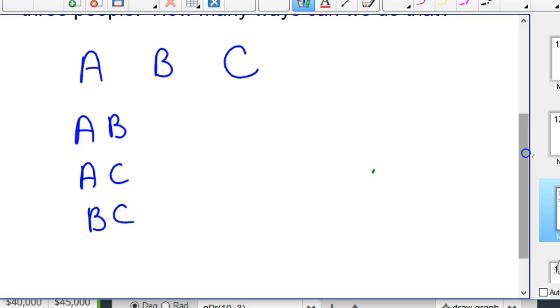If this were a permutation, and we're talking about president and vice president, we would have also included B, A, C, A, and C, B. But a combination is a permutation where we divide out the repeaters. So notice how that's repeated, A, B is repeated twice.